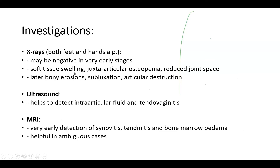You might see soft tissue swelling around the joint, extra-articular osteopenia, and a reduced joint space. In late stages, you will see bony erosions from the pannus, which makes little holes in the bone, subluxation, and articular destruction. You might also see ankylosis. Ultrasound is useful to detect intra-articular fluid and tenosynovitis. MRI is helpful for detecting synovitis early, showing bone marrow edema, and is especially helpful in ambiguous cases.